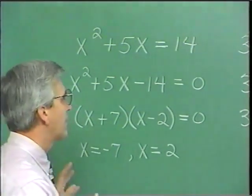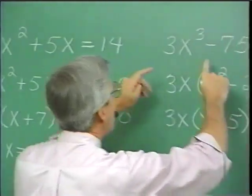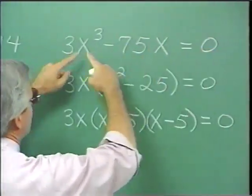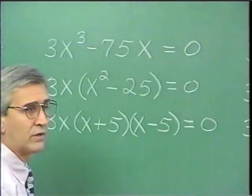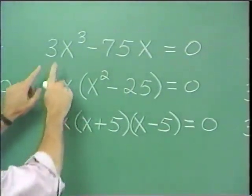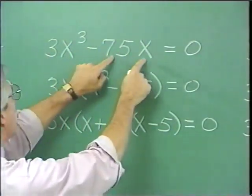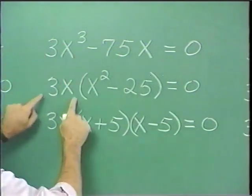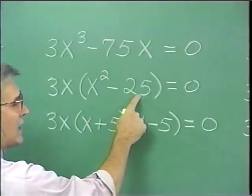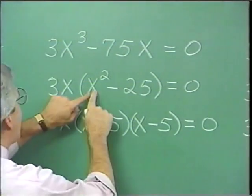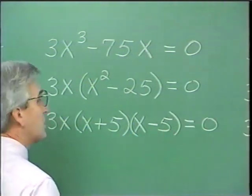Before we leave the method of factoring, I'd like to show you an interesting nuance. This is not a quadratic equation — it's a third degree equation, but we can solve it using the method of factoring. We look for a common factor in these two terms. We find that 3x is common to both terms, so we factor out 3x, leaving x squared from the first term and minus 25 from the second. We see the difference of squares, so we factor into the sum of terms times the difference of terms.